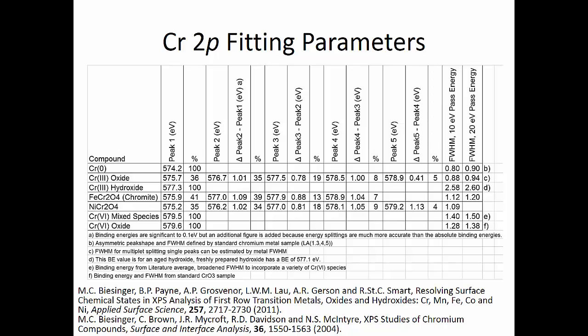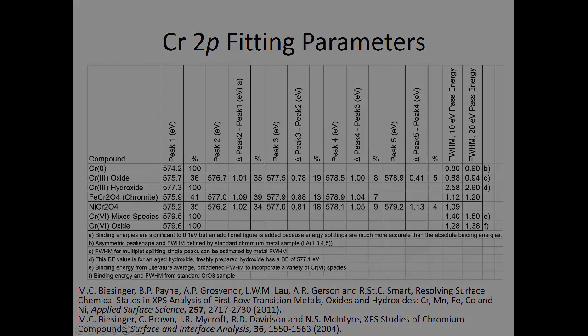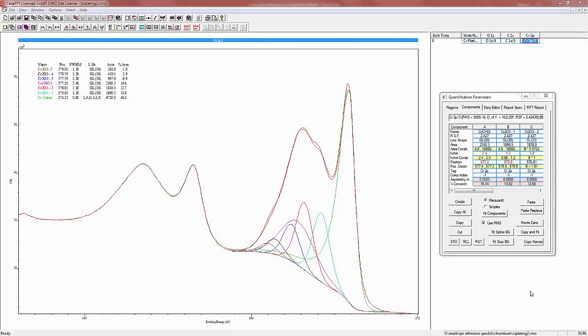This table spells out exactly all the different peak separations, peak positions, and area ratios you can use for different full width at half maxes at different pass energies. This information comes from the referenced papers and is also available on the website. In CASA XPS, we can set up a set of constraints to mimic all these peak shapes.